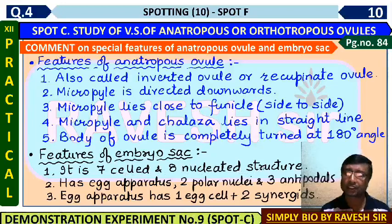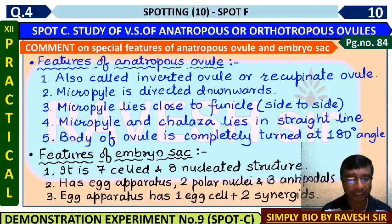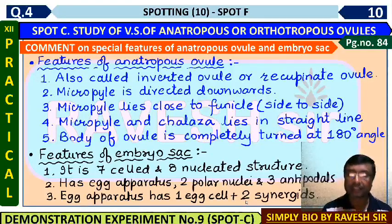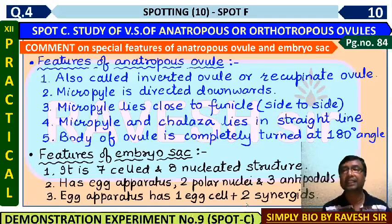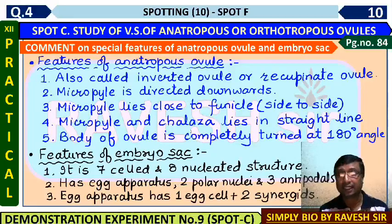The most common type of embryo sac is the Polygonum type — a seven-celled and eight-nucleated structure. It has the egg apparatus at the micropyle end with one egg cell and two lateral synergids, two polar nuclei in the center, and three antipodal cells at the chalaza end. The synergids help attract the pollen tube and, using the filiform apparatus, help rupture it so two male gametes are released into the embryo sac.